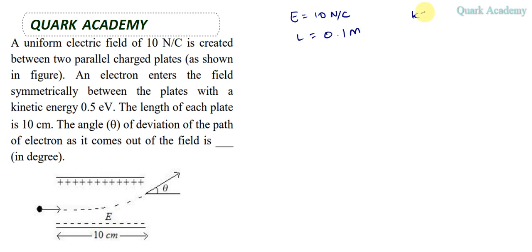Converting the kinetic energy to Joules: 0.5 times 1.6 times 10^-19 Joules. This 1.6 times 10^-19 is the charge of an electron, so we can write this as 0.5e Joules, where e represents the electron charge.